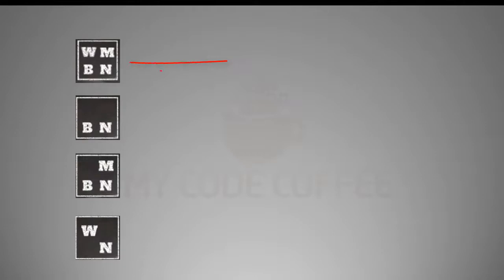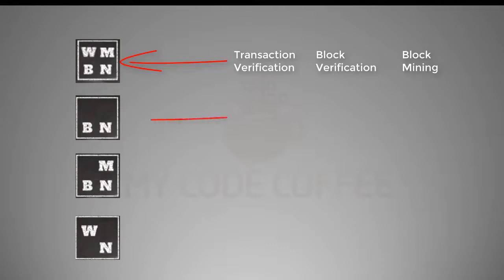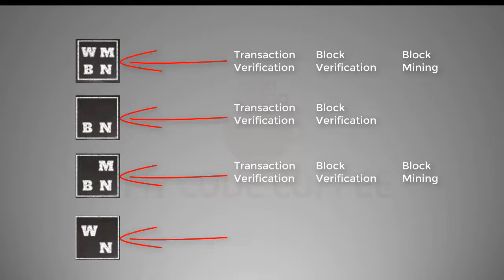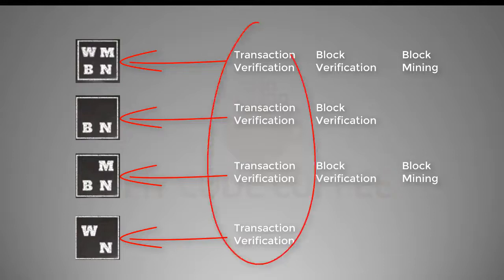If it is Bitcoin Core, it will verify transactions, verify blocks, and mine blocks. If it is a full blockchain node, it will verify transactions and verify blocks. If it is a solo miner, it will verify transactions, verify blocks, and mine blocks. If it is a lightweight wallet, it will verify transactions. So regardless of which type of node it is, one thing that is common is that all of them perform transaction verification.